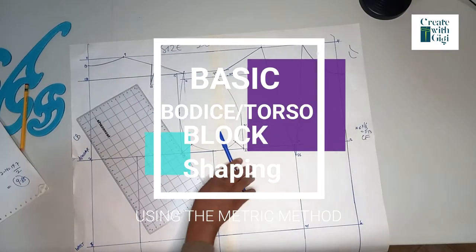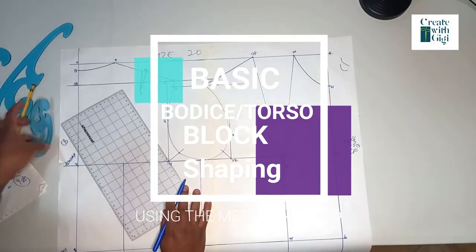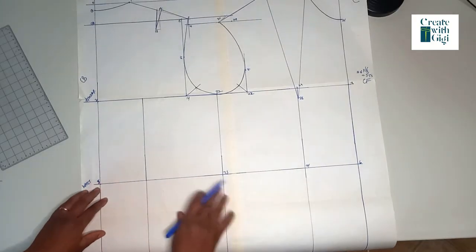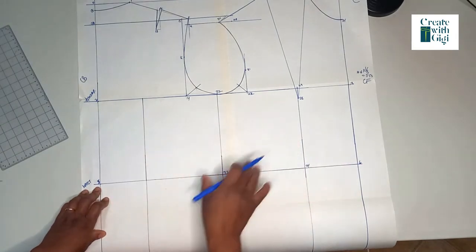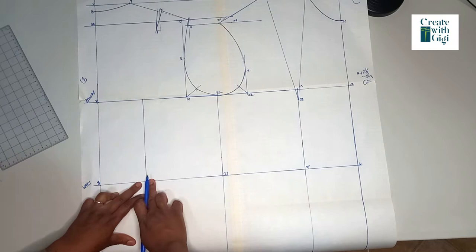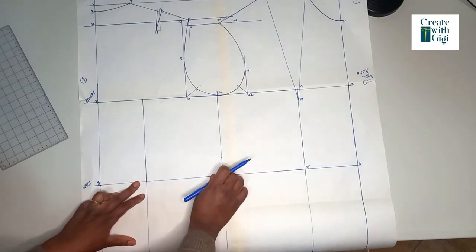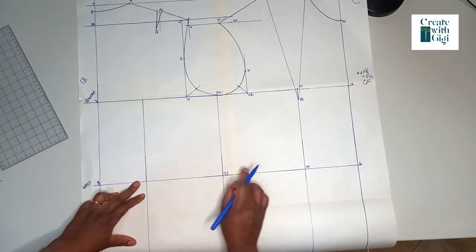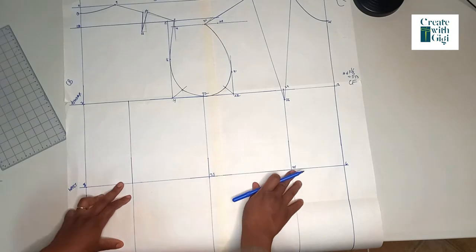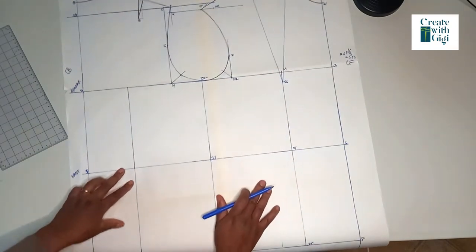Hello beautiful people and welcome back to Create With GG. Today we are going to place darts on our close-fitted bodice that we've drafted in our previous video. Let's begin. We start by taking away 3.5 centimeters from the back, 4 centimeters from the side seam, and 4.5 centimeters from the front, that's from the bust area.